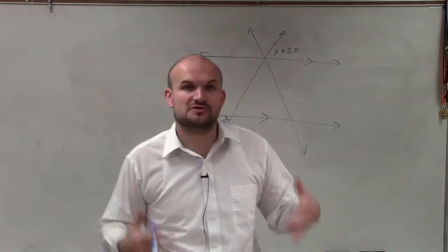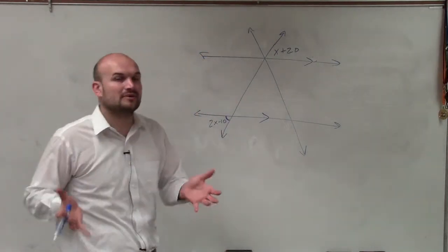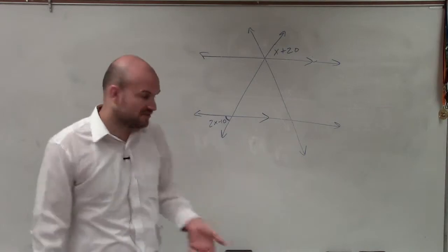And again, whenever we have two transversals, we want to eliminate the extra transversal, the one that we're not going to need. Because to have an angle relationship, we only need parallel lines and one transversal.